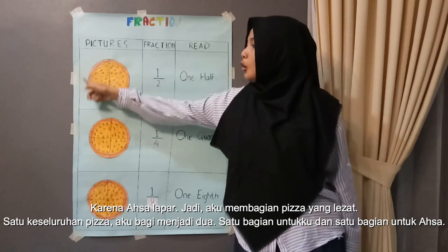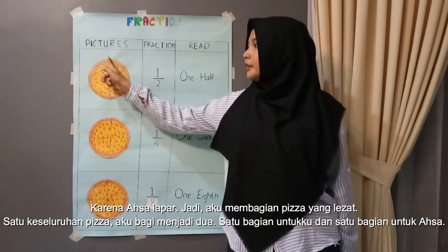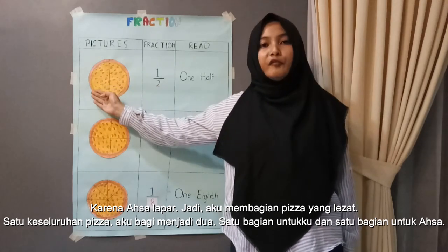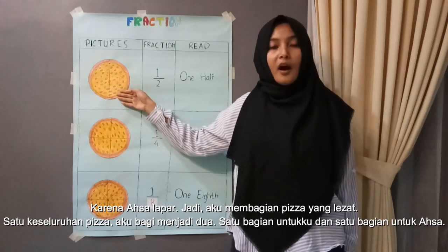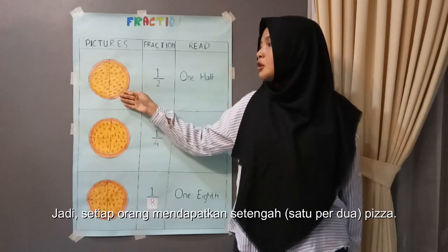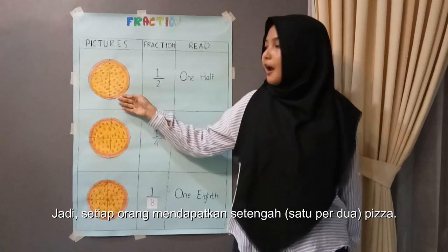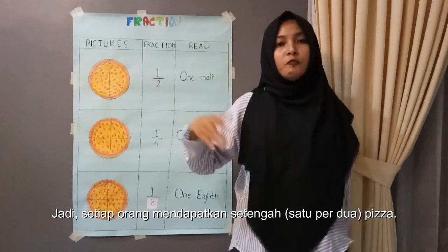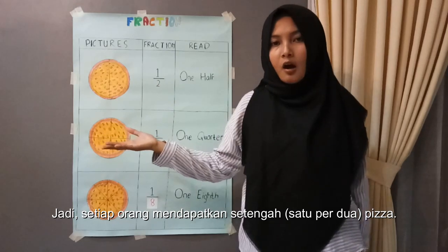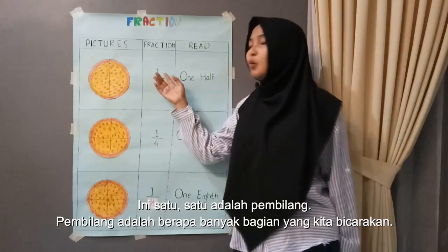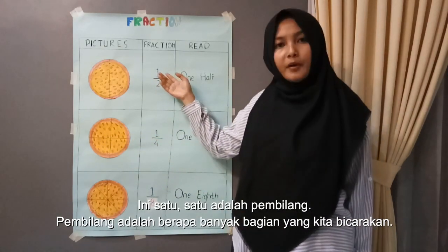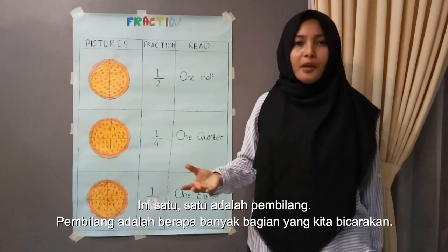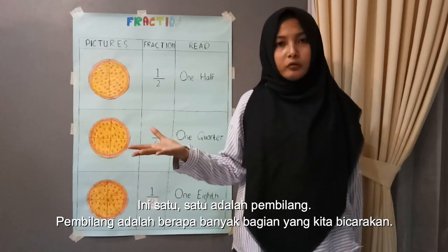One whole pizza, I divide into two. This one is for me, and this one is for Asa. So every person gets one half of the pizza. This is one — one is the numerator. The numerator is how many parts we are talking about.